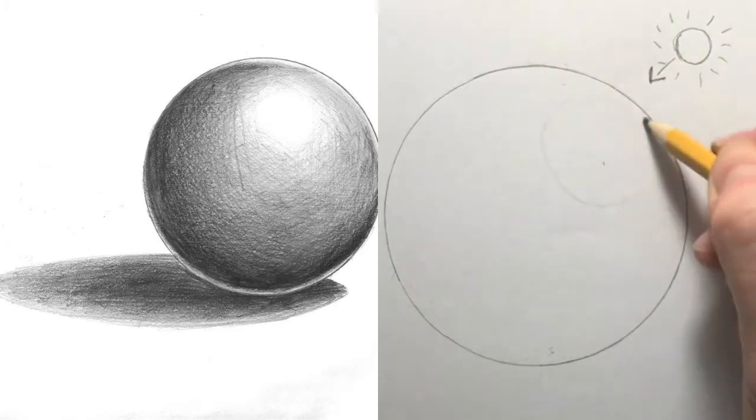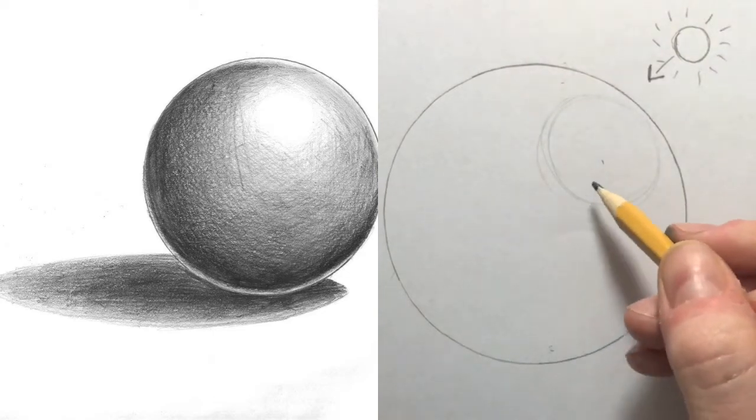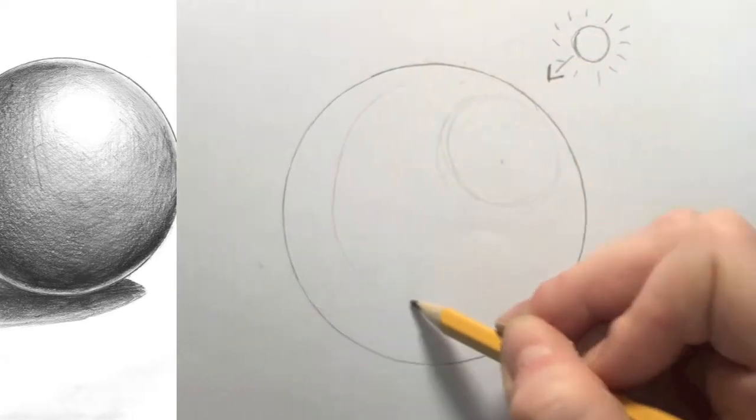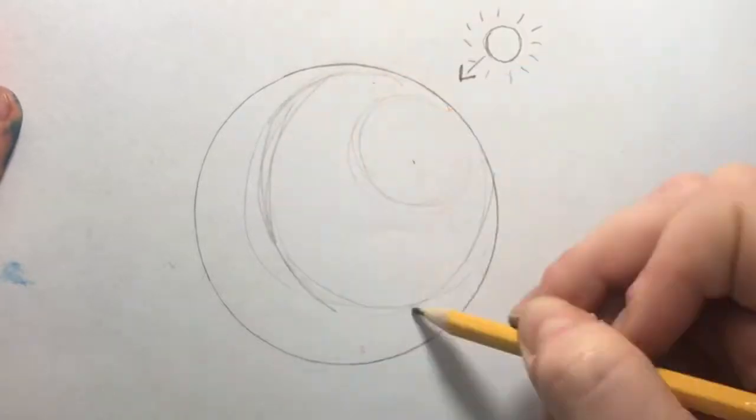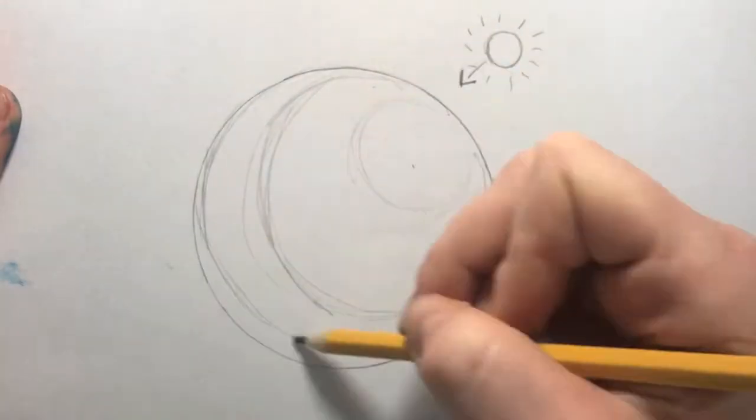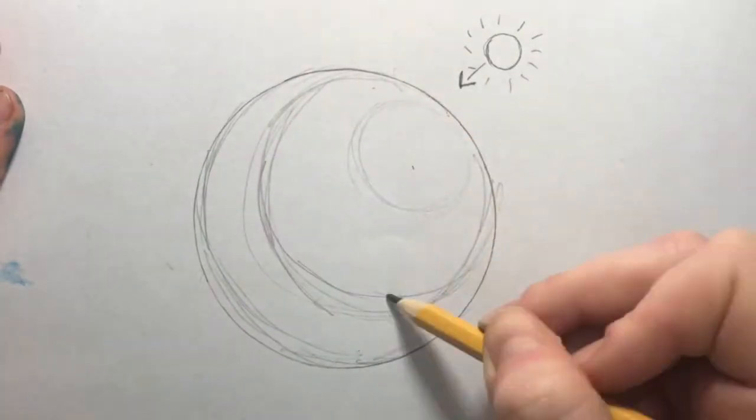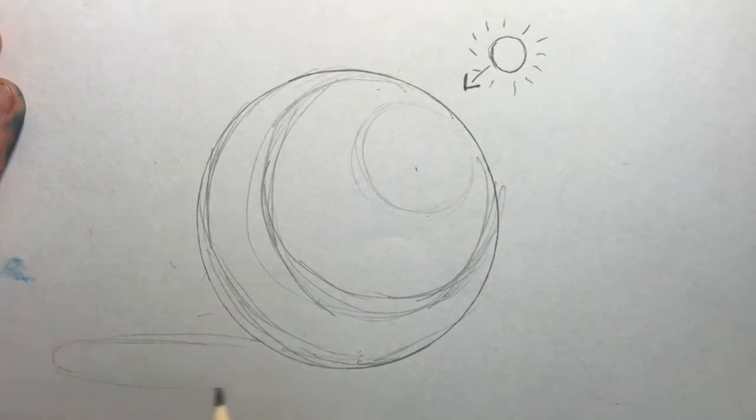Next, you'll make three very light rings inside of your original circle. Watch how I place them and how lightly I'm sketching them. You'll also place a light oval underneath your sphere. This is your cast shadow and it comes from the light source above.